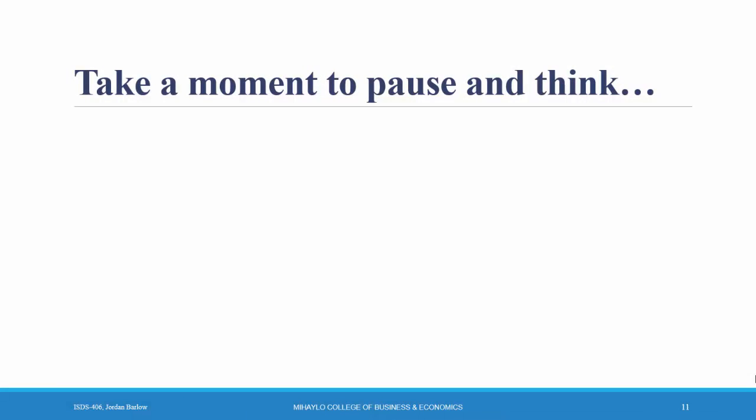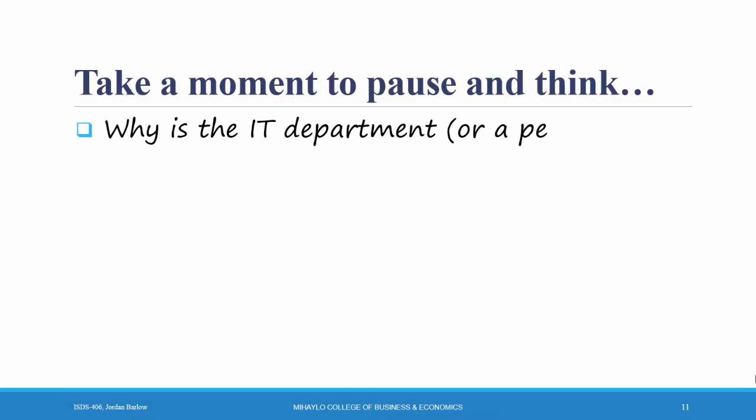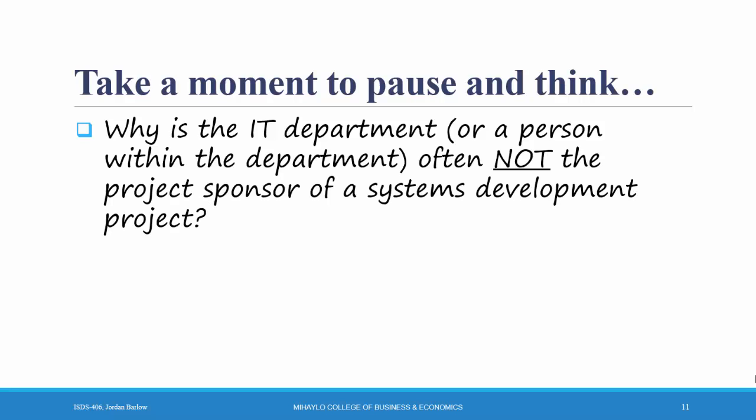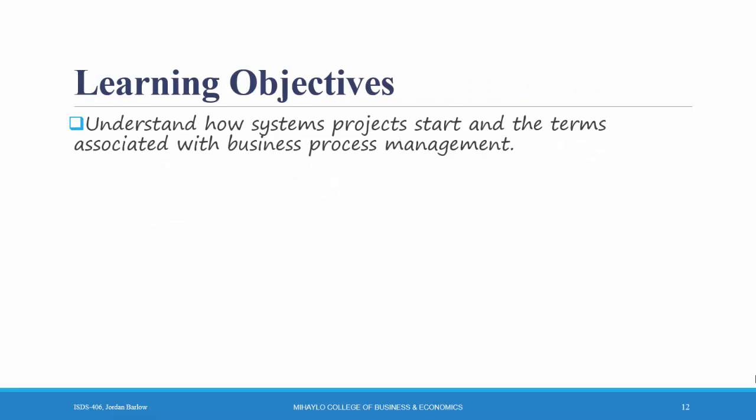Take a moment to pause the video and think about this question: why is the IT department, or a person within the IT department, often not the project sponsor of a systems development project? Again, projects to develop new systems should be based on a business need, not just on a technology. Oftentimes the IT department is not aware of all the needs or processes going on in other departments. To sum up: we've talked about how systems projects start from a business need, we've talked about business process management, and we've talked about a project sponsor being necessary for a project to succeed.